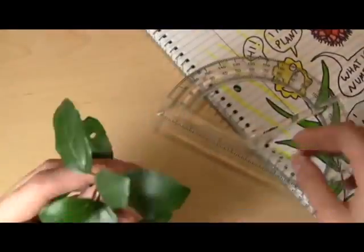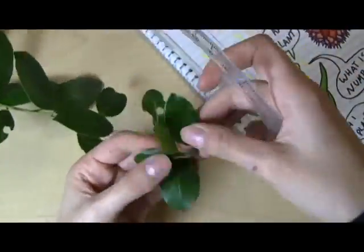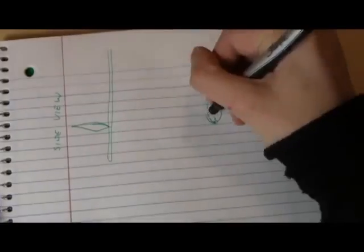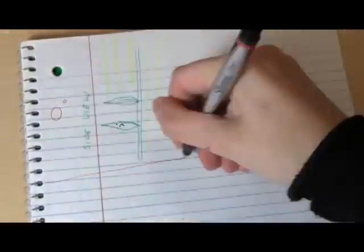Botanists have noticed that plants seem to be fairly consistent when it comes to the angle between one leaf and the next. So let's see what you could do with that. So you grow your first leaf, and if you didn't change angle at all, then the next leaf you grow would be directly above it. So that's no good, because it blocks all the light.